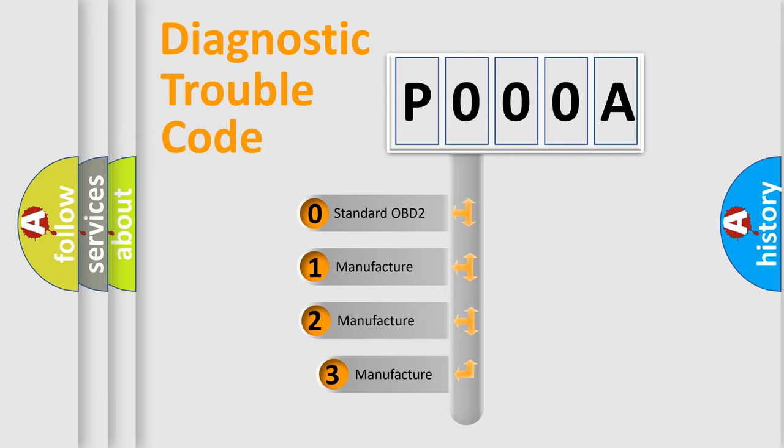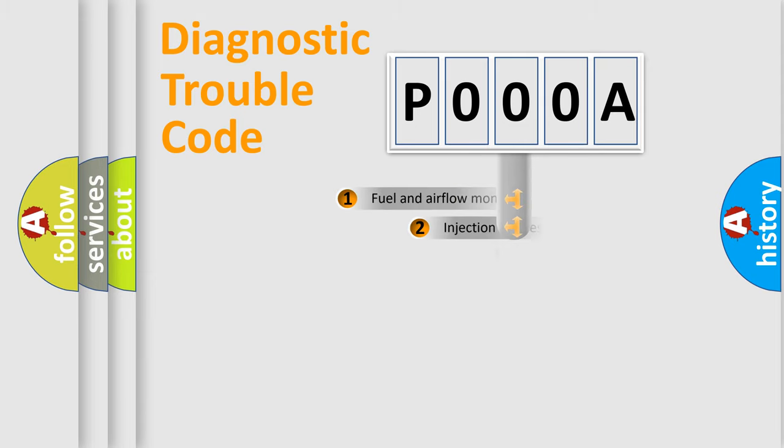If the second character is expressed as zero, it is a standardized error. In the case of numbers 1, 2, or 3, it is a manufacturer-specific error expression.